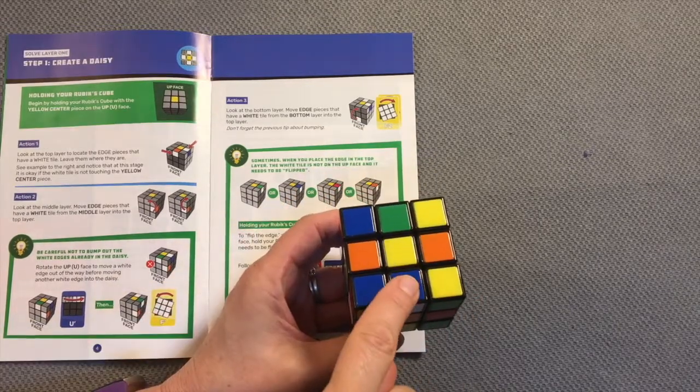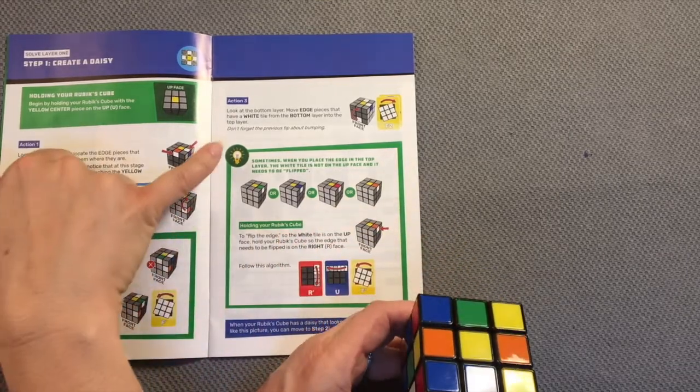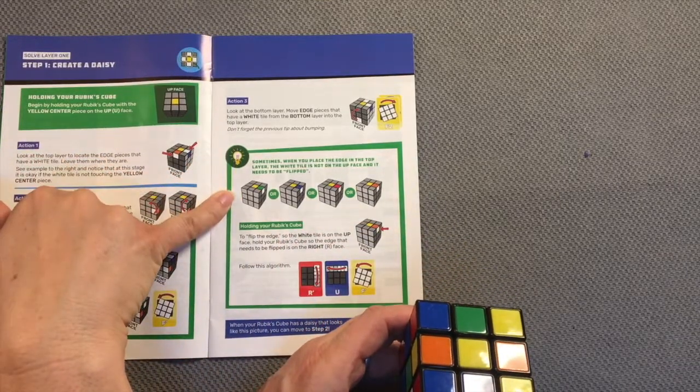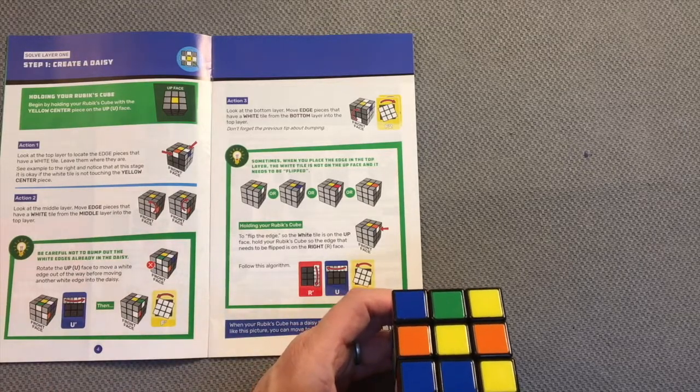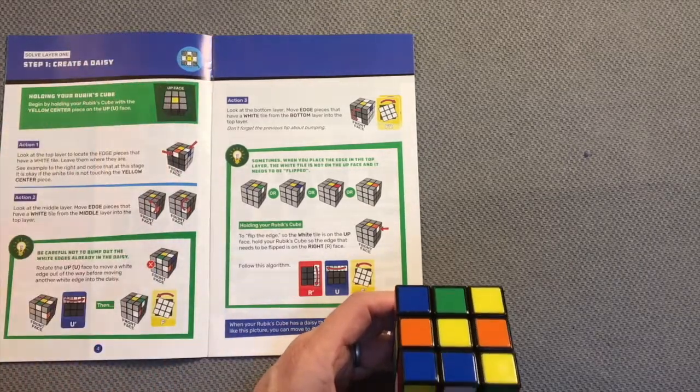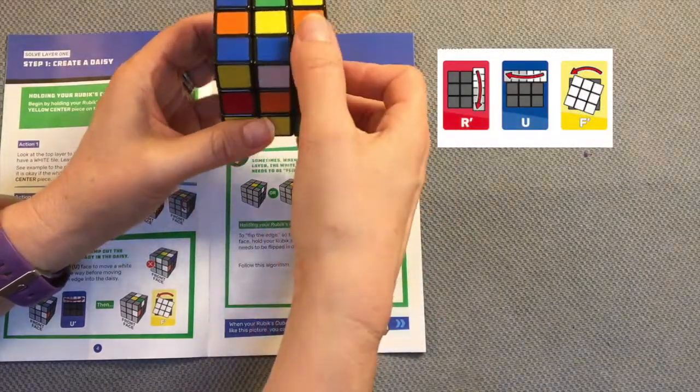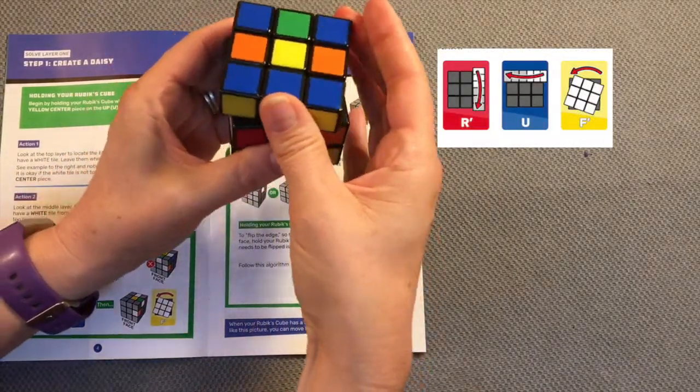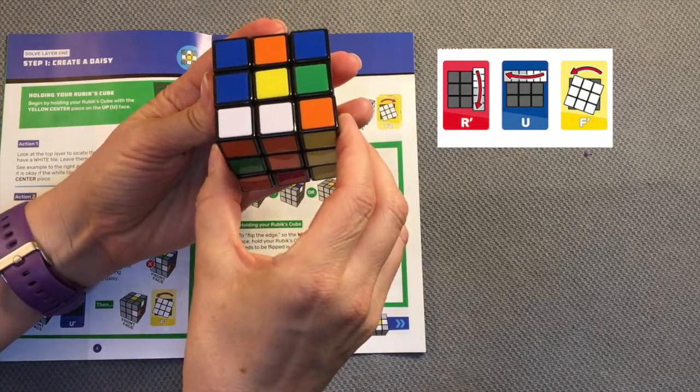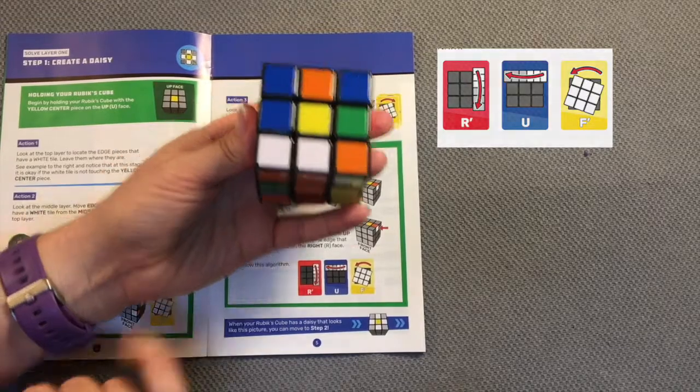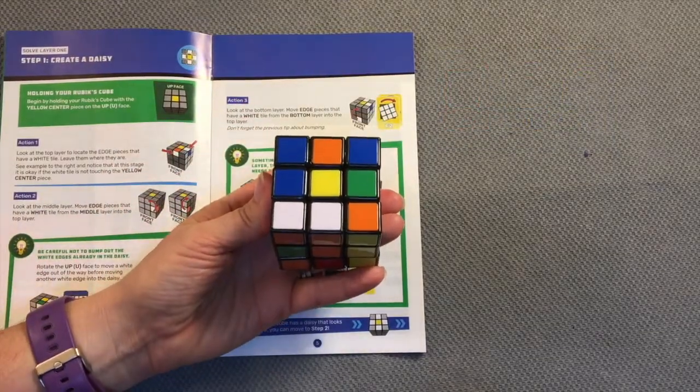It is not on the up face, so I need to follow this algorithm in order to flip this tile to get to my daisy. My first move is right towards me, up face away, front face to the left. And there, my white tile is now on the up face and I'm starting my daisy.